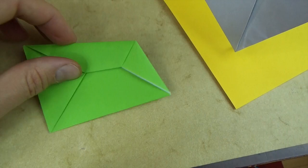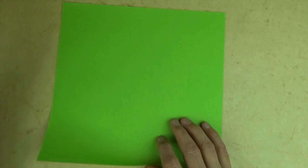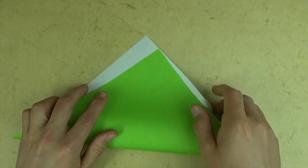All right. So for this model, I'm going to use a 10 inch square of Kami. And if you want a colored envelope, begin white side up. Let's start out by folding diagonally in half. Try to make very precise folds.